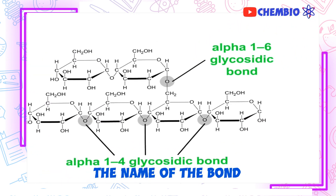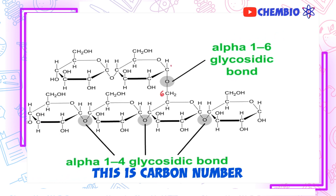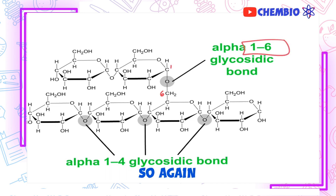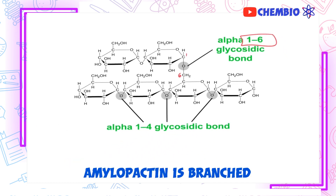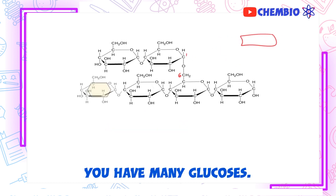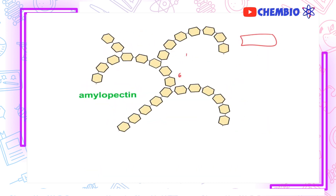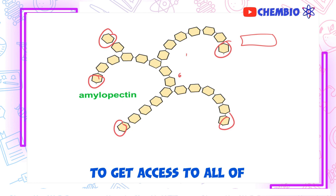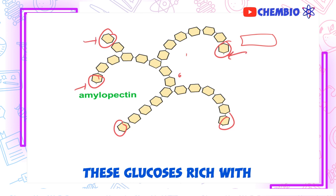The name of the bond — since this is carbon number 6 and this is carbon number 1 — the glycosidic bond is called a 1,6-glycosidic bond. So amylopectin is a branched molecule. You have many glucoses available — check this, this, this — all of these glucoses are available all at once. That's a great advantage for the cell to get access to all of these glucoses, rich with energy, to release energy for the cell.